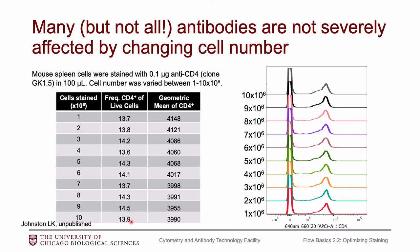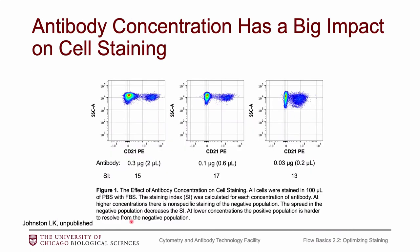Just because this worked for CD4 doesn't mean every antibody will behave this way — some antibodies are more sensitive to cell concentration. But in general, if you have to change cell concentration for whatever reason, it's not as much of an issue. On the other hand, antibody concentration has a really big impact on your results. In a similar experiment where I varied only the amount of antibody, you can see how much the data changes between tubes. So concentration is extremely important for antibodies and less important for cells.